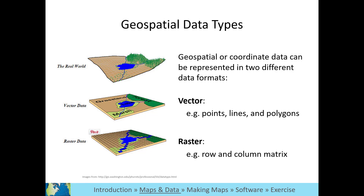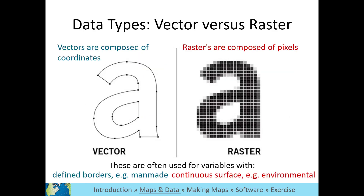Vector represents the world in points, lines, and polygons. What data format is being used usually depends on the type of data. Vectors are composed of coordinates and are best suited to man-made features with defined locations and boundaries.